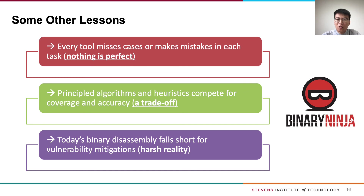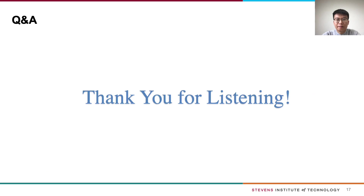We can learn the following lessons from our work. First, every tool makes mistakes in each task — nothing is perfect. Second, principled algorithms and heuristics compete in terms of coverage and accuracy — that is a trade-off. The last lesson is that today's binary disassemblers fall short for usability in security mitigations. We would appreciate Vector35 Inc. for providing us a free license of Binary Ninja after reading our paper. Thank you for listening — I'm ready to answer questions.